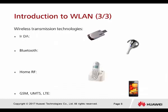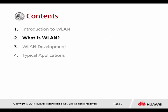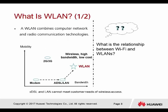These are some of the assembled devices used for wireless technology: the infrared receiver, the Bluetooth headset, the radio frequency phone, and also the mobile phone. So, what is WLAN? WLAN combines computer networking and radio communication technology. Here is a picture showing the difference between modem, ADSL, WLAN, and also the 3G network.